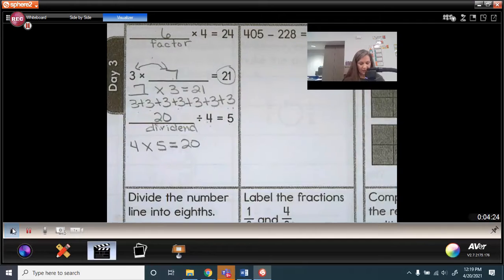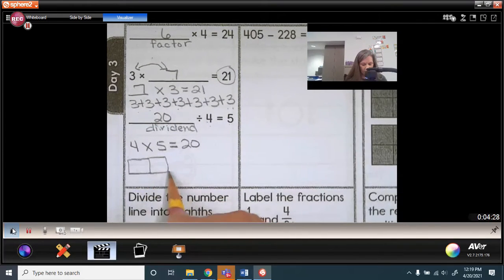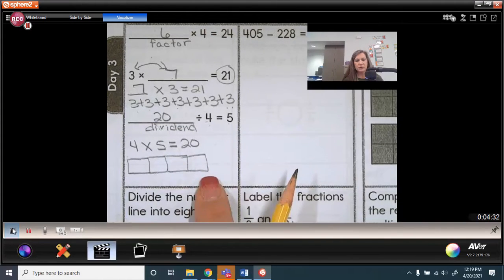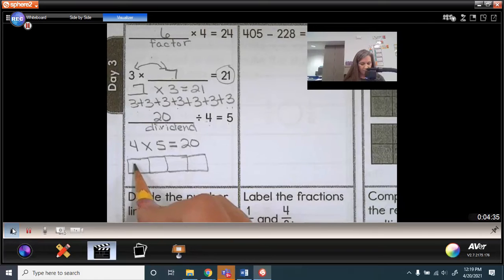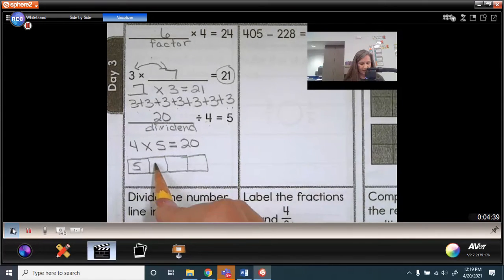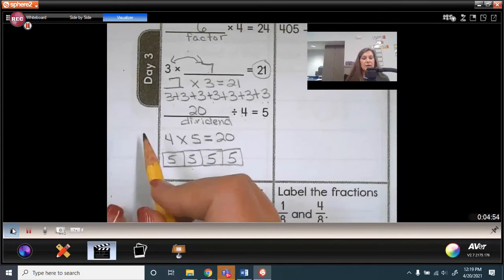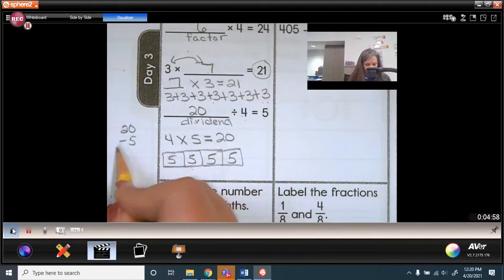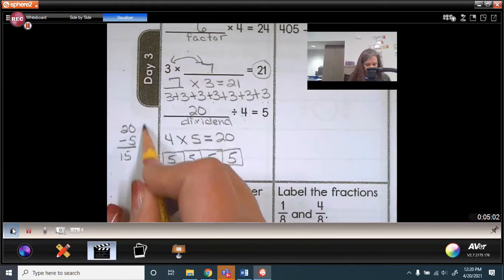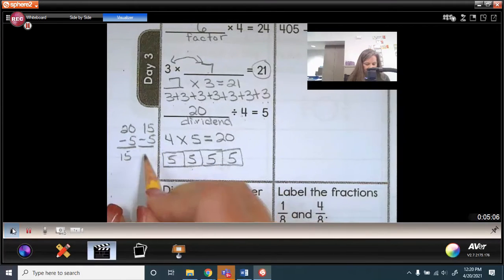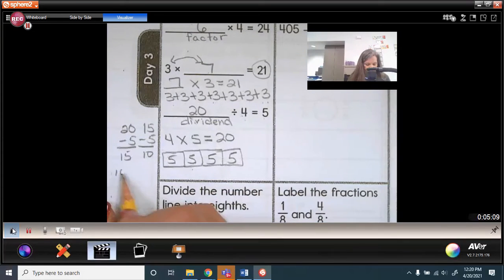What that means is if I take 20 objects and put them into 4 equal groups, there is going to be 5 here. I'm going to take another 5 and that gives me 10 left. I take out another 5, that leaves me with 5 left. I take out another 5 and now I'm at 0. So I can use repeated subtraction and take away 5 and that leaves me with 15. Then I take 15 and subtract another 5 and that leaves me with 10. Then I take out another 5, that leaves me with 5, and finally I subtract another 5 and that leaves me with 0.